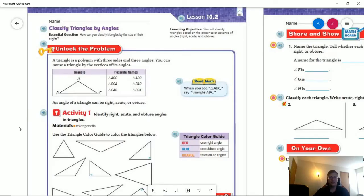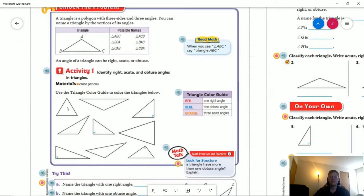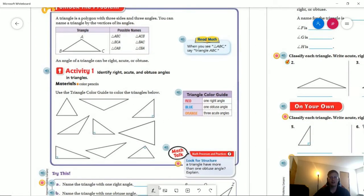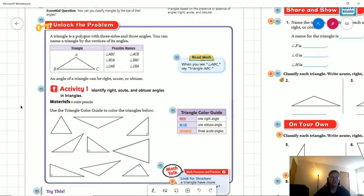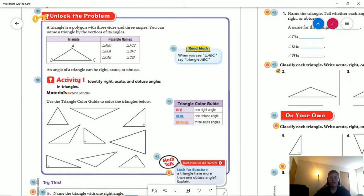So let's go ahead and take a look at the unlock the problem. They wanted us to use coloring pencils. As long as you're drawing an arrow or something like that, that's fine. I'm not sure how many of you have coloring supplies at home. So we are going to use red if we see a right angle, which means we are going to have a right triangle. If we have acute angles for all three, we're going to use orange.